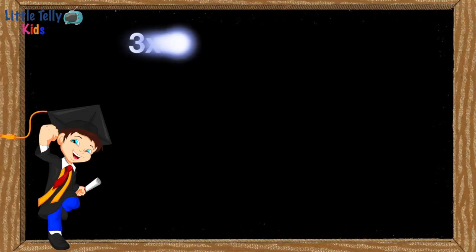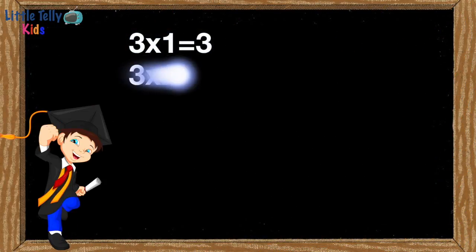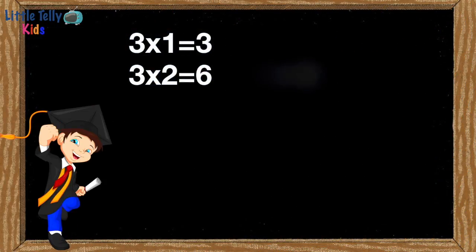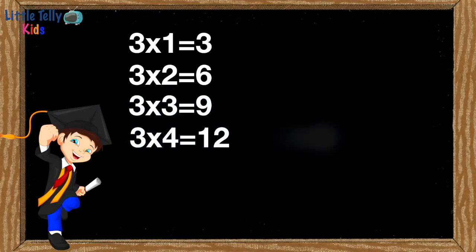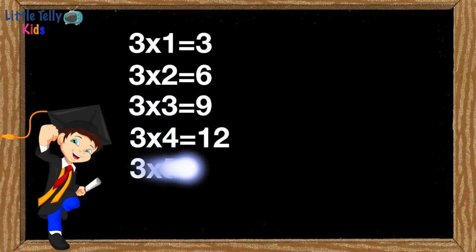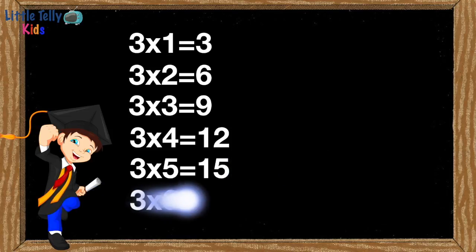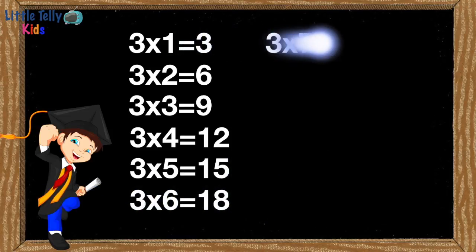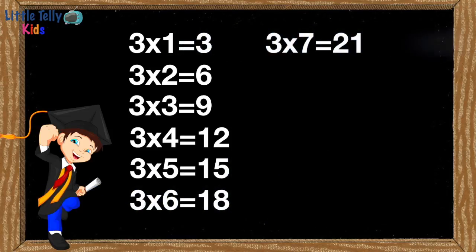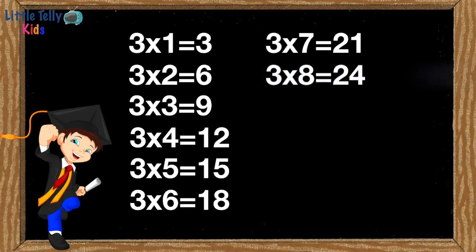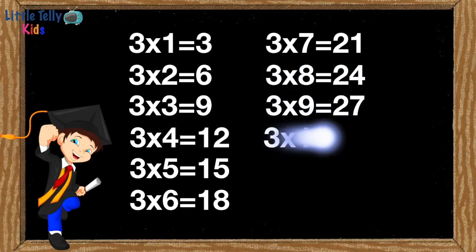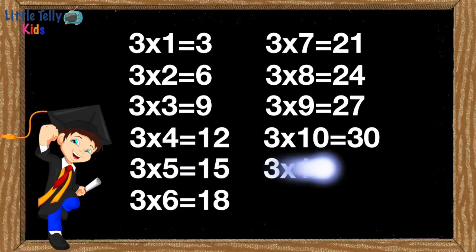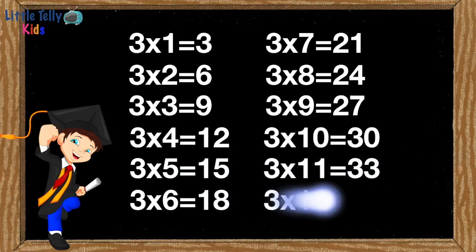3 1s are 3, 3 2s are 6, 3 3s are 9, 3 4s are 12, 3 5s are 15, 3 6s are 18, 3 7s are 21, 3 8s are 24, 3 9s are 27, 3 10s are 30, 3 11s are 33, 3 12s are 36.